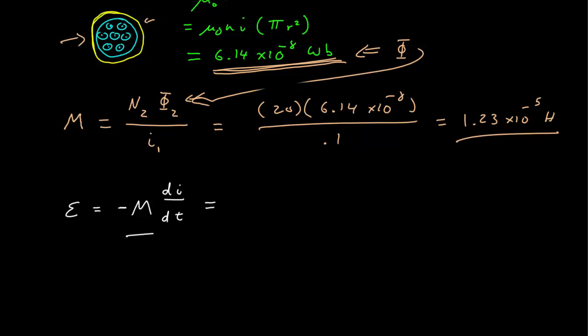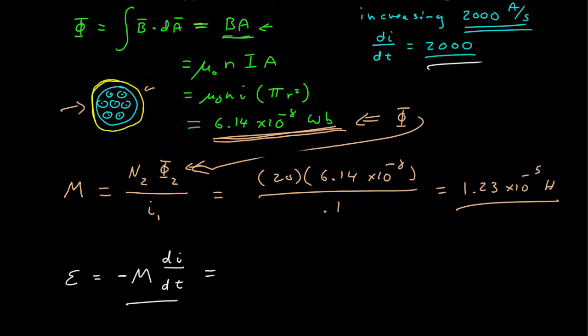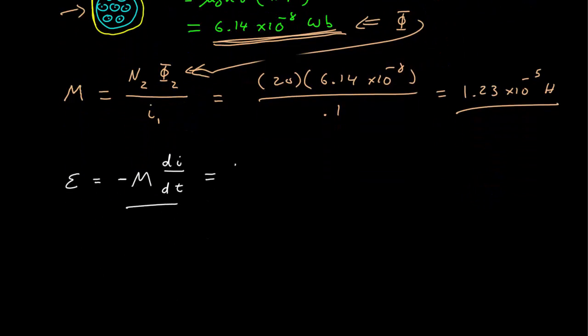That was one of the things we were given initially. So 1.23, we know everything now. The negative sign is just giving us an orientation, times 2,000, and we have this 10 to the minus 5 here. I calculate that to be negative 2.46 times 10 to the minus 2 volts. This is the induced EMF.